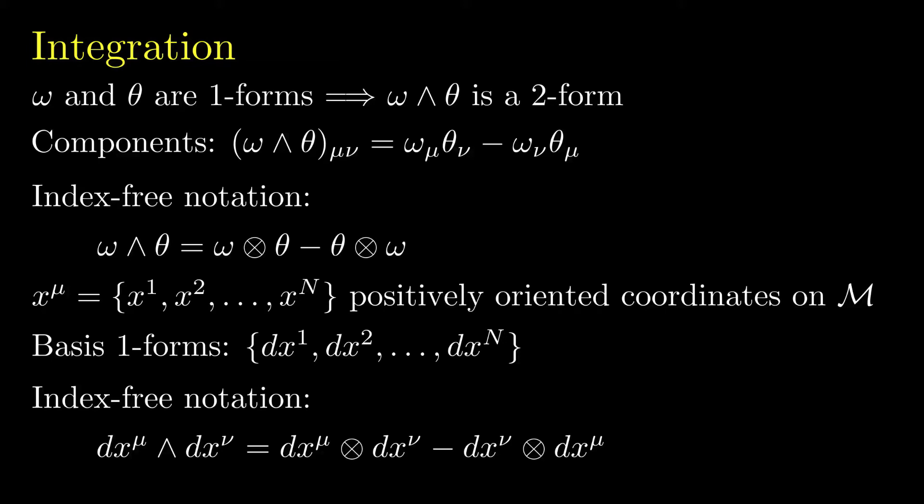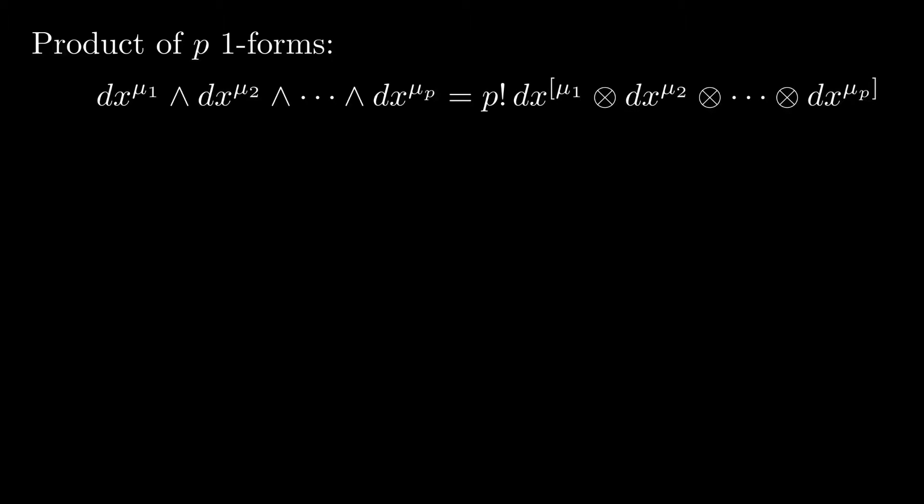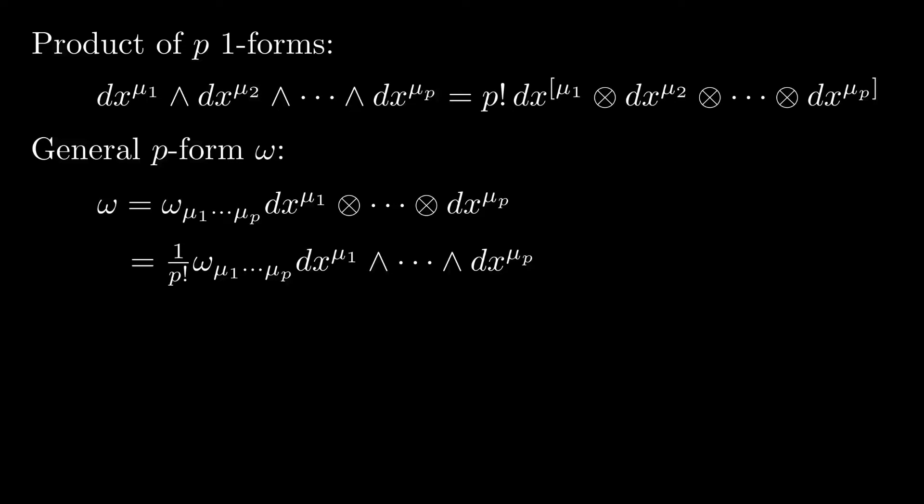Note that the superscript on dx-mu is simply a label used to enumerate the basis one-forms. In fact, the components of the one-form dx-mu are delta-mu-nu. So index-free notation here means we're omitting the tensor indices, which are the subscripts on the p-forms. Extending this notation to a multiple product of p basis one-forms, we have dx-mu1 wedge dx-mu2 wedge ... wedge dx-mu-p equals p-factorial times the tensor product of dx-mu1 through dx-mu-p, anti-symmetrized on all labels mu1 through mu-p. A general p-form omega can be expanded as 1 over p-factorial times the components of omega times the wedge products of dx-mu1 through dx-mu-p.